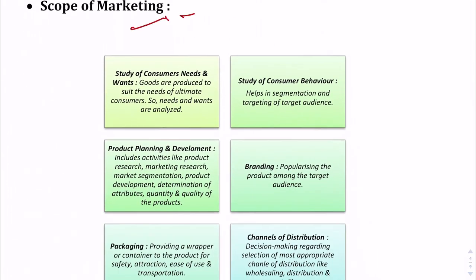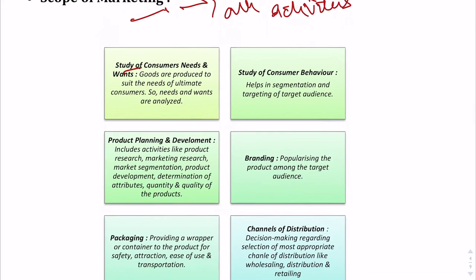Now let us move to the scope of marketing. The scope of marketing comprises all activities under its purview. First, a marketer needs to study consumers' needs and wants. Since identifying and fulfilling needs is the basic objective of marketing, the marketer must study what consumers need, what they want, and what kinds of products and services they desire. That is why marketing precedes production.